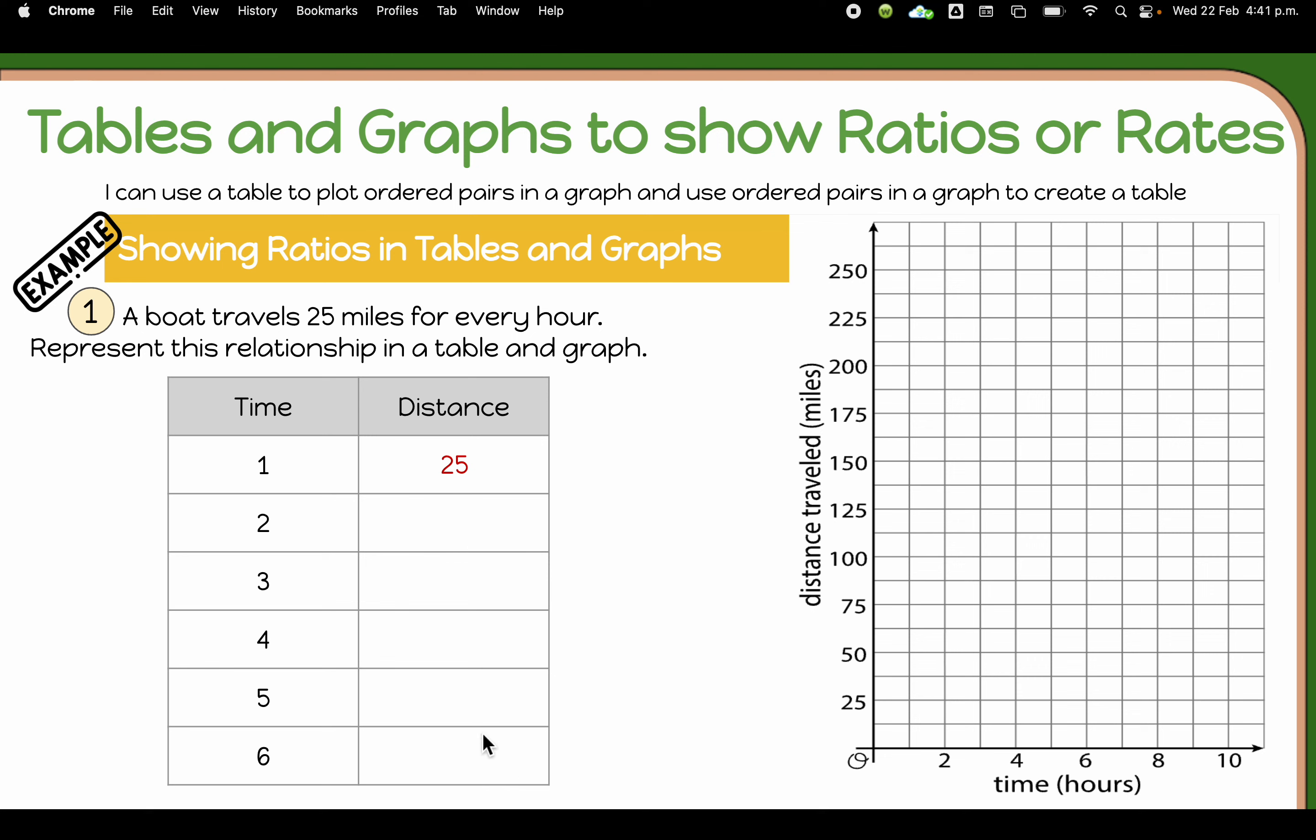So now we can fill in the table for the rest of it. So how far would it be for two? 50, three, 75, four, 100, five, 125. And for six hours, we would travel 150 miles.